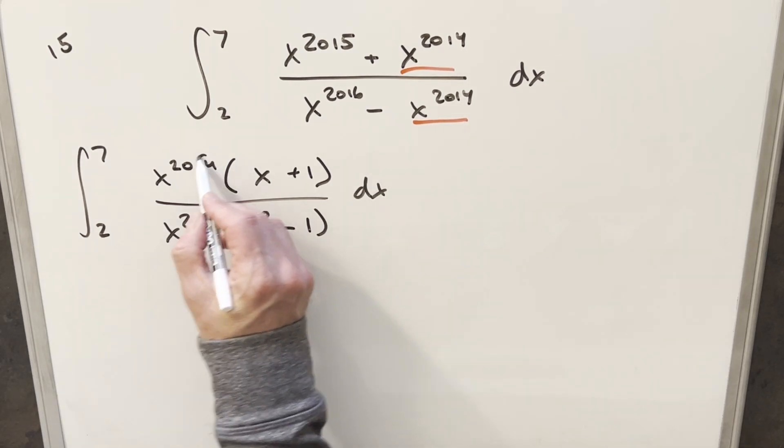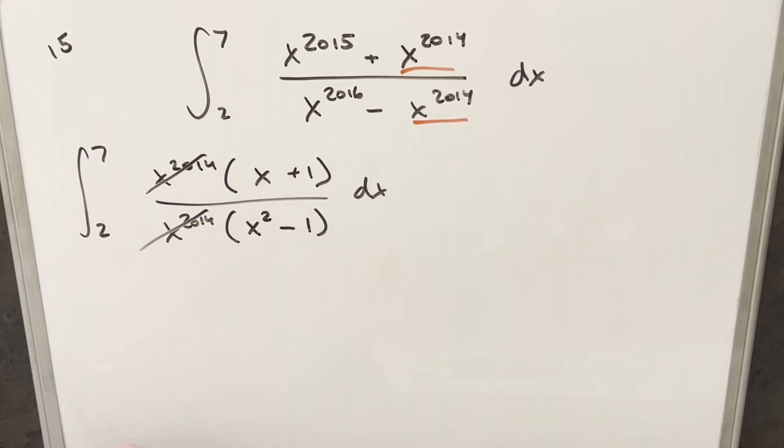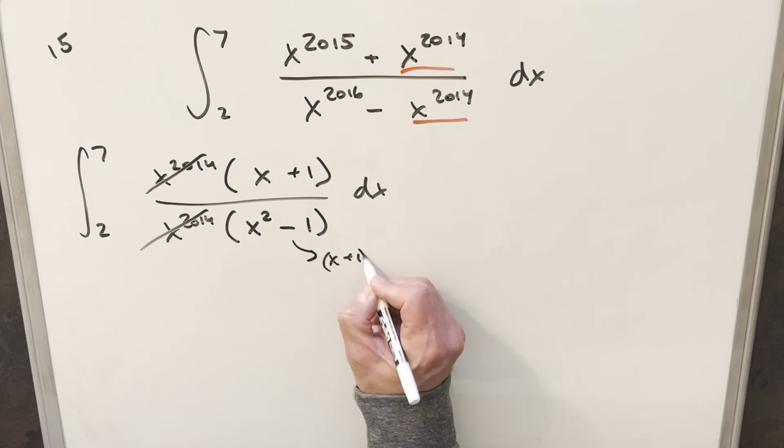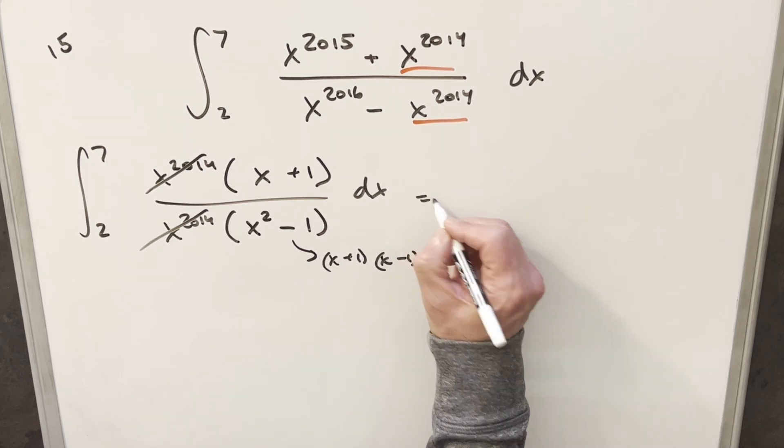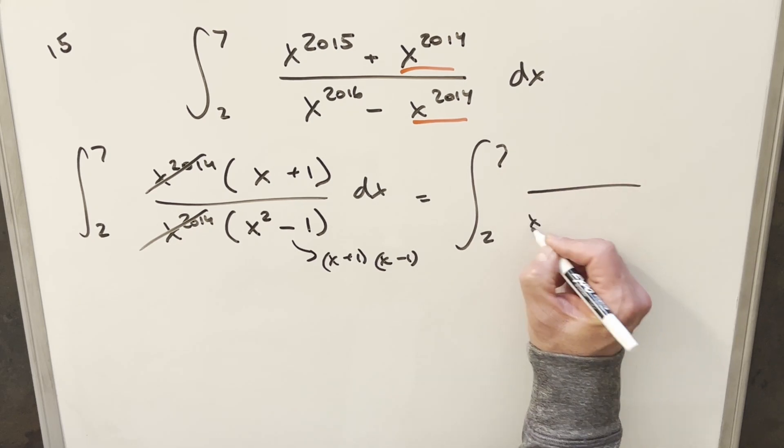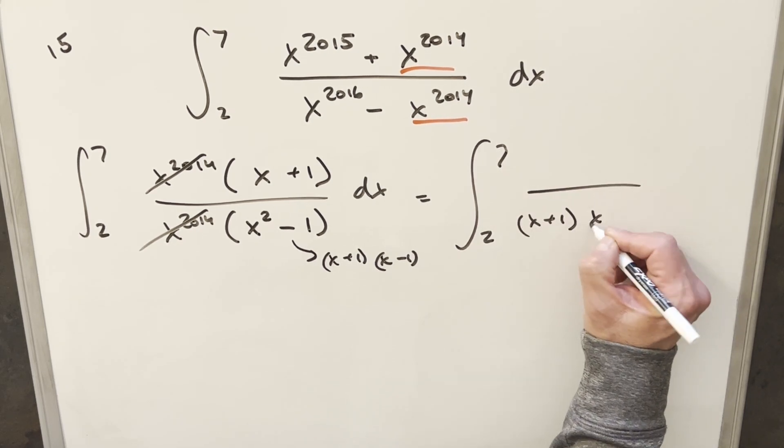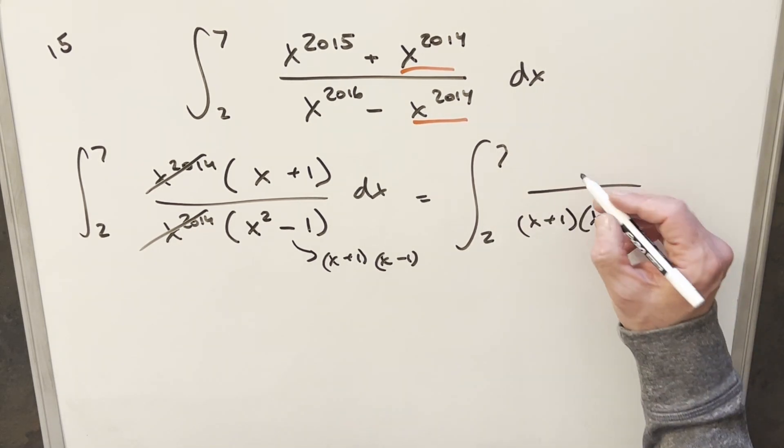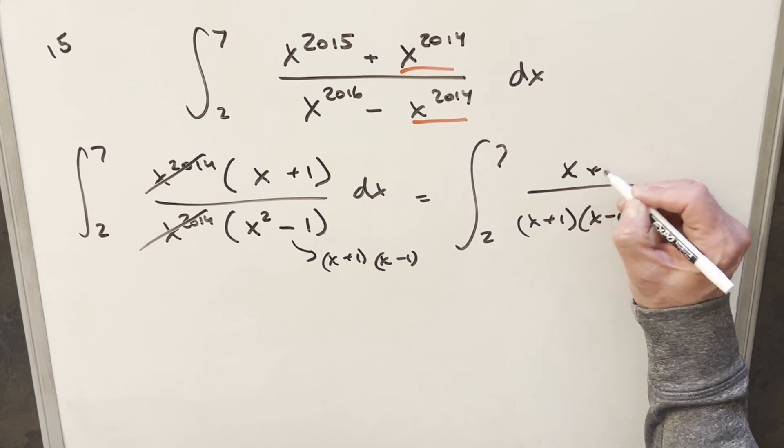The terms up front cancel first. Now we're not worried about big exponents anymore. But this here I can actually factor as well: x plus 1 times x minus 1. Let's rewrite again from 2 to 7, putting this as x plus 1 times x minus 1, and we'll have our x plus 1 up here.